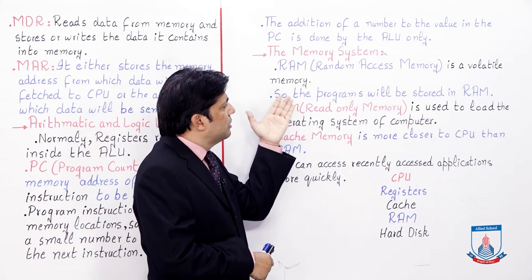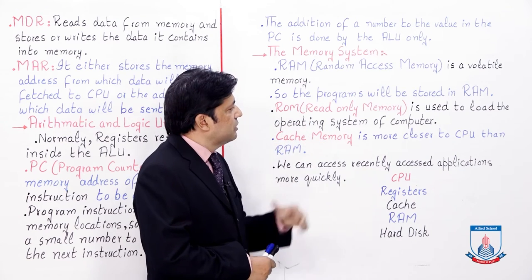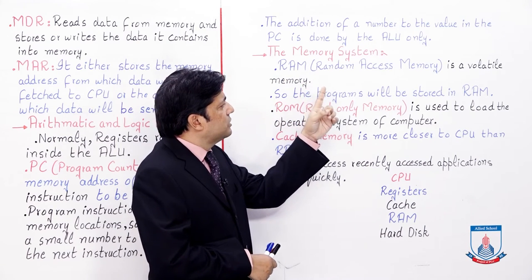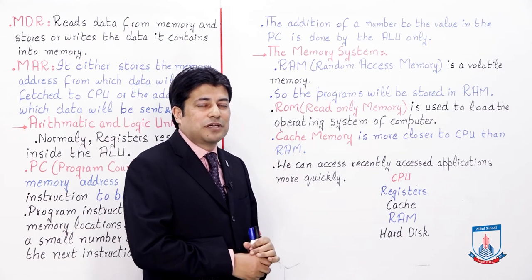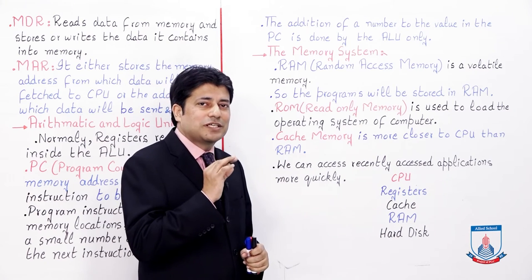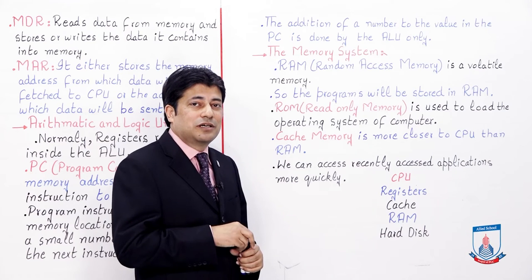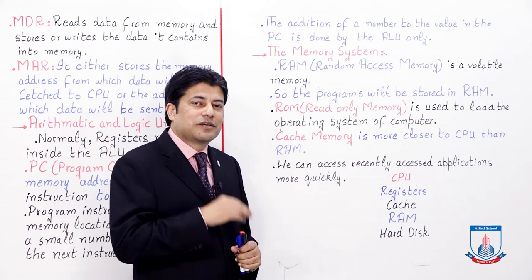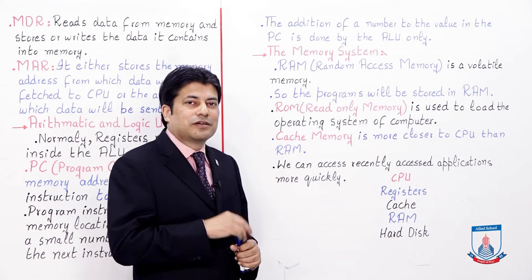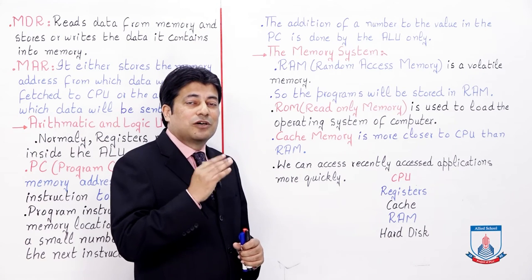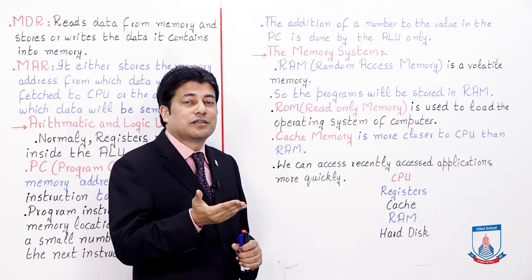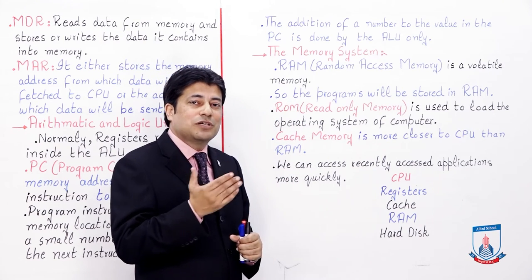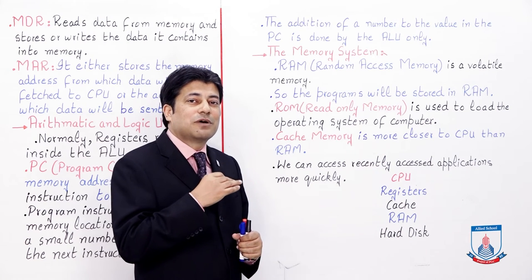Besides registers, our memory system includes RAM, ROM, and Cache Memory. I will talk about these three memories and explain what they are used for. First: RAM — Random Access Memory — is a volatile memory. The biggest property is that it is volatile. When your computer is on, data exists in RAM. When you turn the computer off, all data in RAM is erased.